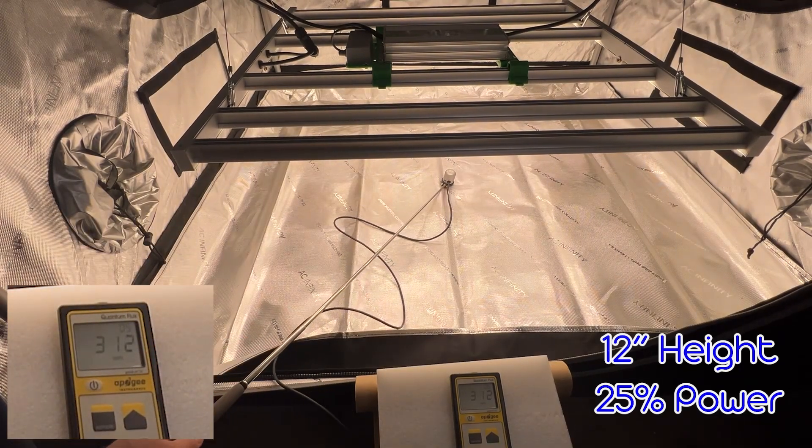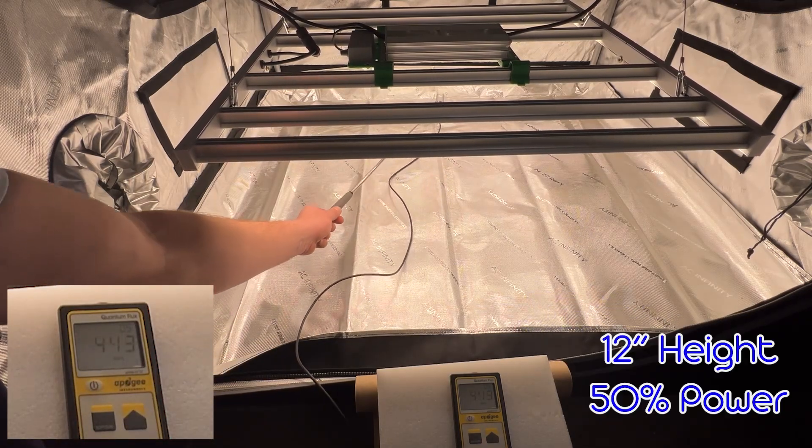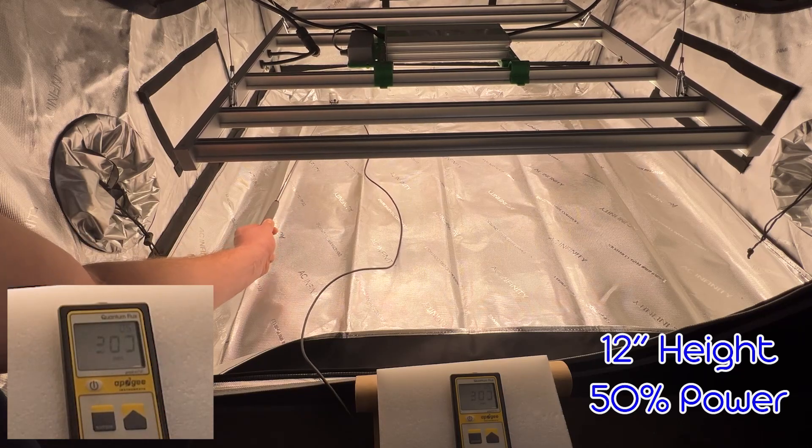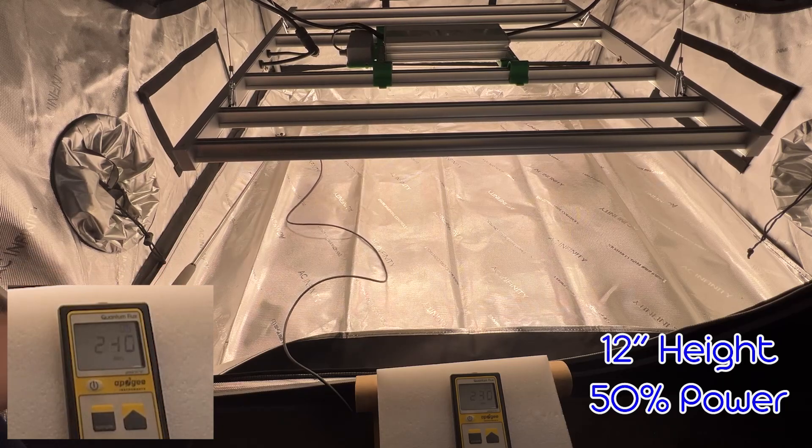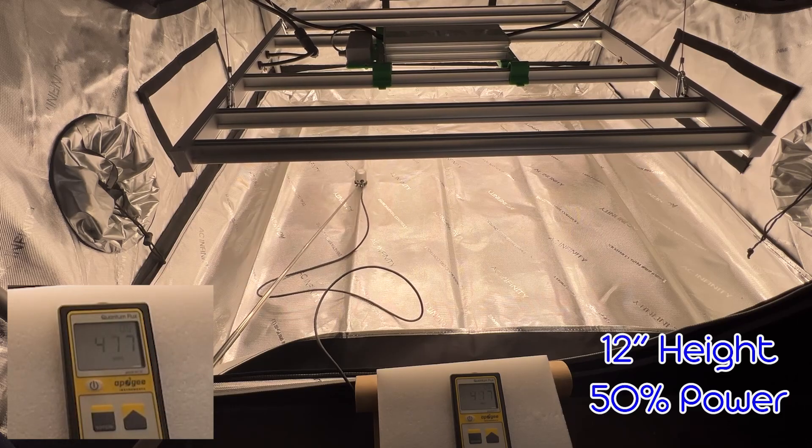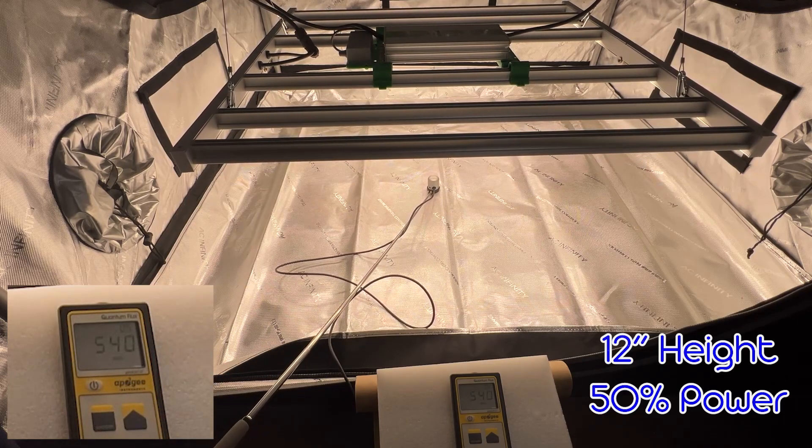And here we are, the second hanging height, which is 12 inches, and we started off at 25% power, but we're moving into that 50% power range and seeing around 250 to 100 in the corners, about 300 on the sides, and all the way up to about 600 in the middle, 550.